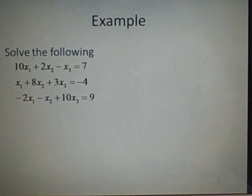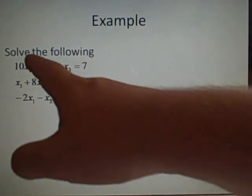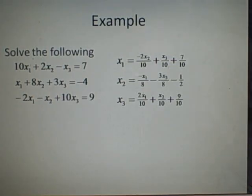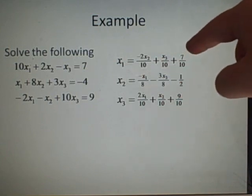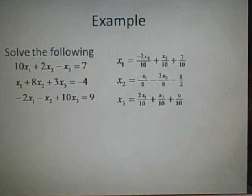Example: solve the following system. We have three equations with variables x1, x2, x3 in each. The first step is to rearrange the first equation for x1, the second for x2, and the third for x3, putting them in the matrix form. It's generally customary to put the constants at the very end.